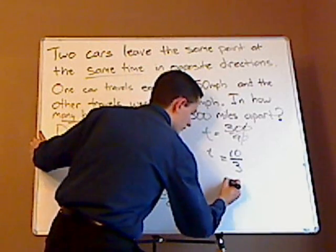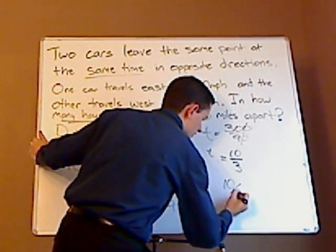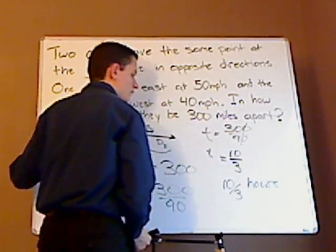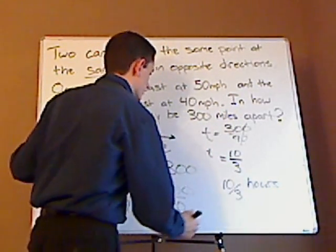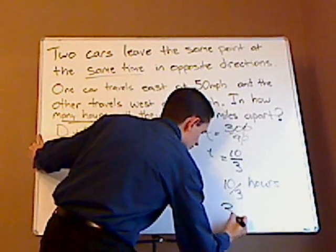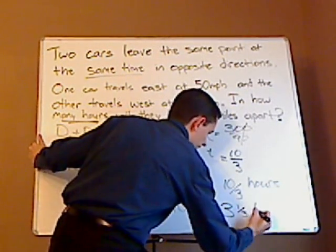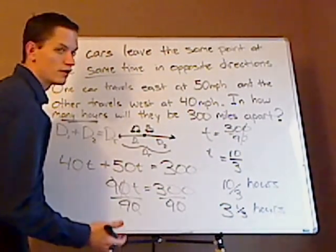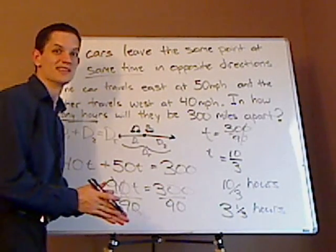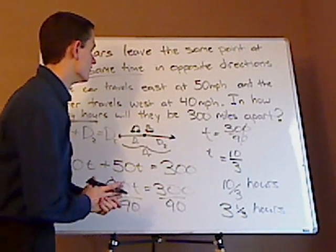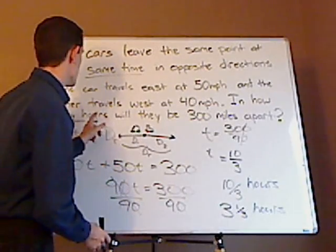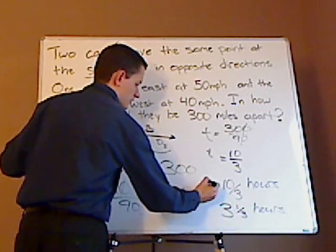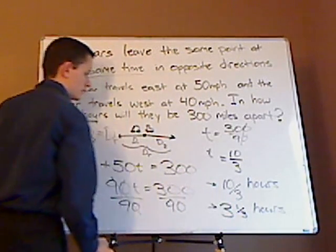So my time is 10 thirds hours. And if you want, you can make that a mixed number. So that would be 3 and 1 third hours. So it's going to take them about 3 hours, 3 hours and 1 third to be exact. If you want, you can calculate the minutes on that, but you don't necessarily have to because the answer's in hours. And you're going to see one or the other if you're doing a multiple choice test.